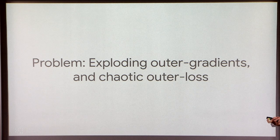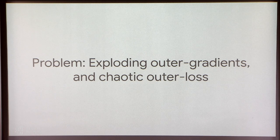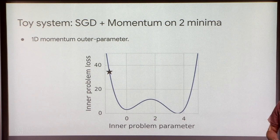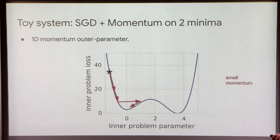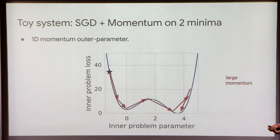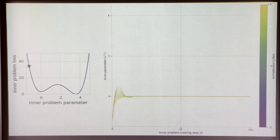The more exciting and also more pathological problem is that gradients with respect to the optimizer parameters theta often diverge, or alternatively your outer loss surface is chaotic. This is best illustrated in a toy 1D system. Here we have a one-dimensional loss surface, and we're trying to do gradient descent on this loss surface with SGD plus momentum. If you have a small value of the momentum parameter, you will descend into the first well. I'm plotting, as a function of inner problem training step, what your inner parameter value is, and here I'm plotting log of 1 minus momentum.